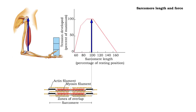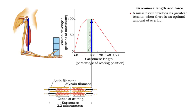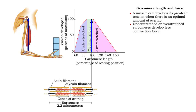Look at the graph depicting length-tension relationships. For a skeletal muscle cell, the optimal sarcomere length is about 2.2 micrometers. At this length, the muscle fiber is stretched just above 100% of its resting length. Significantly understretched or overstretched sarcomeres result in lower tension and weaker muscle contraction.